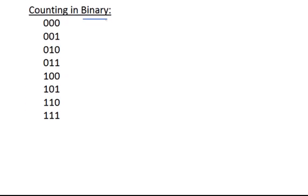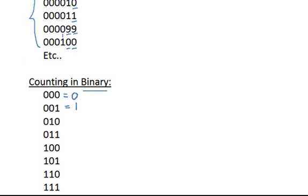Looking at how we count in binary, let's start from the beginning. Zero is represented as 0, 0, 0. To count up, we increment the rightmost 0 to a 1. The key difference between decimal and binary is that in binary we only have the two symbols 0 and 1. So when we want to count up from 1 to 2, we've reached the maximum digit in the rightmost position. We reset that 1 to a 0, start a new column, and count up from 0 to 1 in the next column — giving us 0, 1, 0, which is 2.